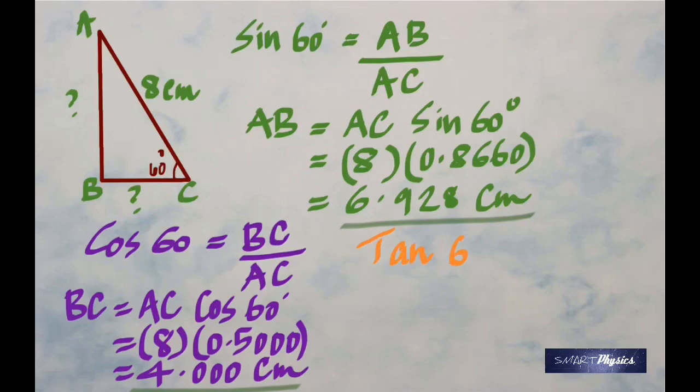Now what is tan theta? It is opposite divided by adjacent, so that's AB divided by BC. Since we know AB and BC, divide the two and you get 1.732 cm.